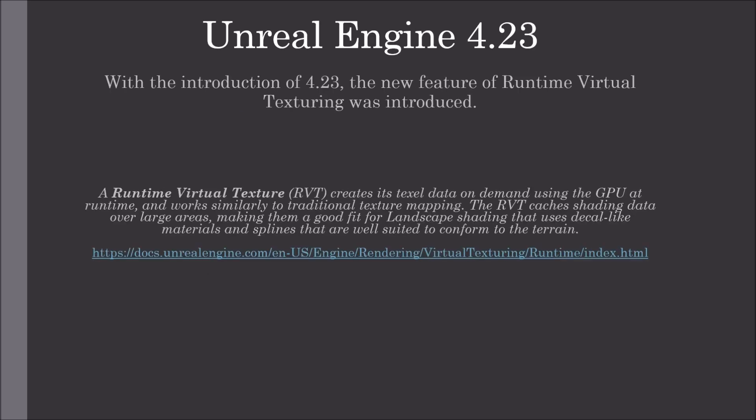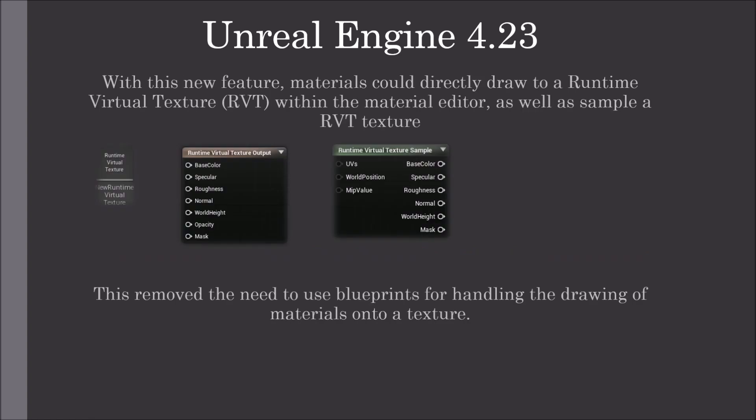With the introduction of Unreal Engine 4.23, the new feature of Runtime Virtual Texturing was introduced. With this new feature, materials could directly draw to a Runtime Virtual Texture within the material editor, as well as sample this texture. This removed the need to use Blueprints for handling the drawing of materials onto a texture.